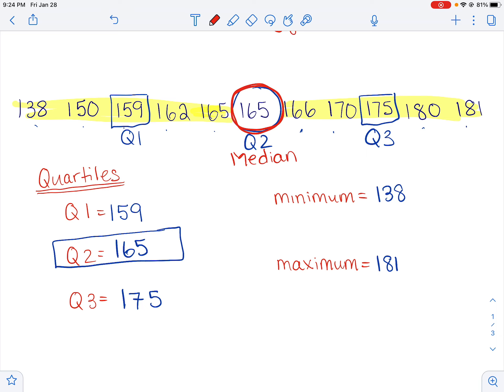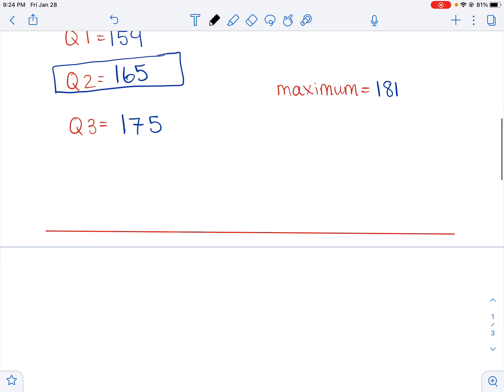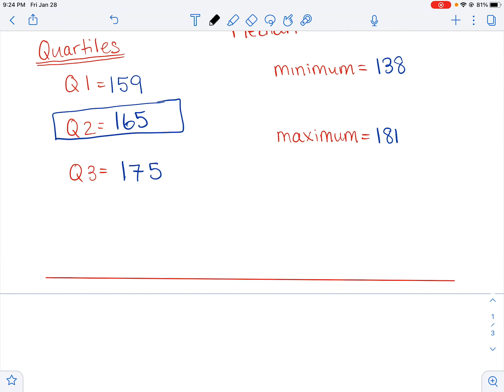So now that we have all this information, we are going to take these five numbers and create our box plot. So here's how we do that. We make a scale. So I made a red line and then I'm just going to make somewhat of a scale for it. I know I have to go all the way from 138 up to 181. So I think I'll start my scale down here at 130. And I have to get all the way up to like 185-ish. So maybe I'll space it out and just go up by tens.